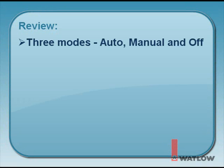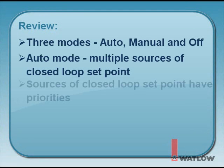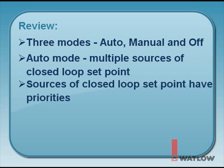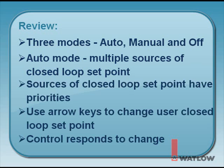Let's review what we've covered. There are three modes of control: auto, called closed-loop control; manual, called open-loop control; and off. Auto mode can have multiple sources for establishing a closed-loop setpoint. These sources have varying priority, meaning some sources override other sources. The up or down key is used to enter a user closed-loop setpoint, and the entry occurs three seconds after the keys are released. The controller responds by adding or removing energy to the load to achieve the desired setpoint.